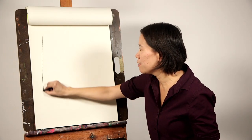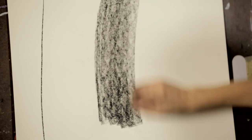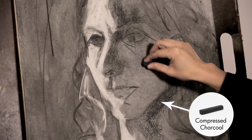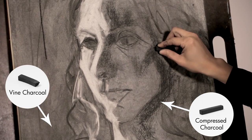You can make a very thin, very beautiful line like this, but then you can also go in and block in very large areas of tone. Compressed charcoal is a much bigger commitment than vine charcoal because it's a lot tougher to erase.